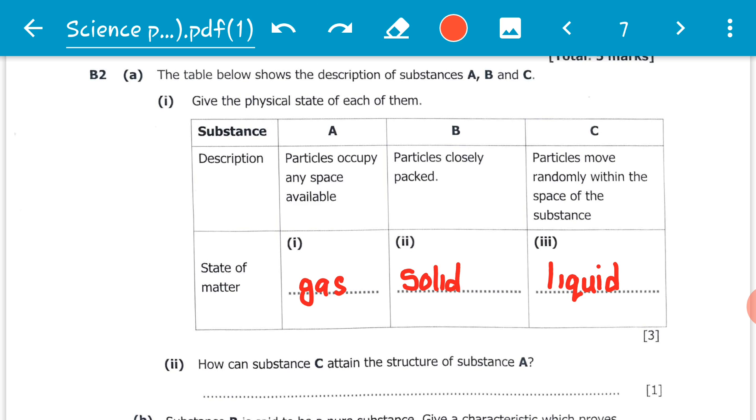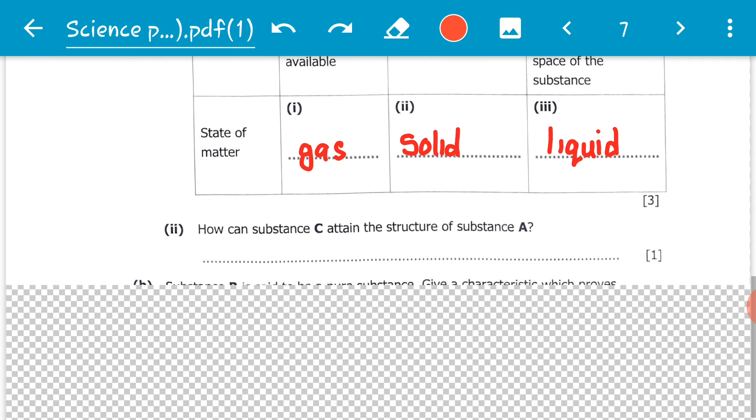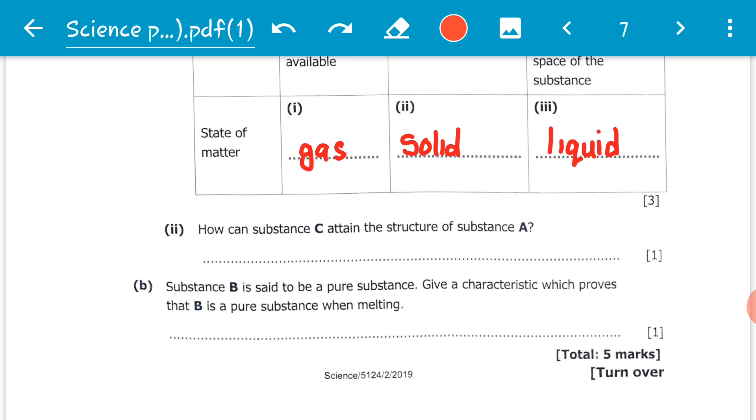There we go, a complete filled up table with a total mark of three - one for each: gas, solid, liquid. We move on to Roman numeral two.